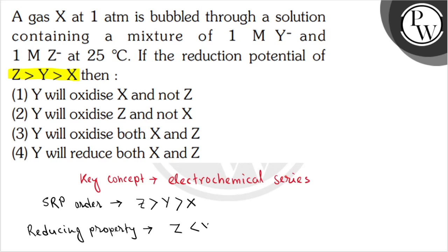The reducing property will be Z less than Y less than X, which is the exact opposite of the SRP order.